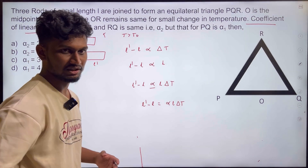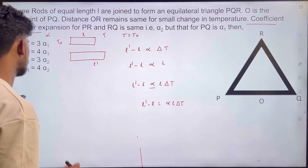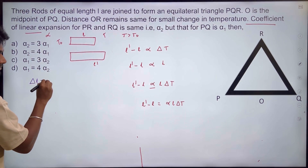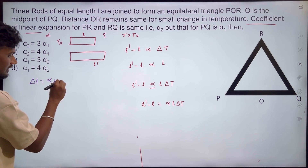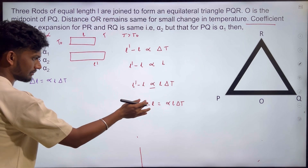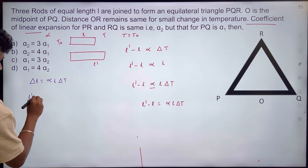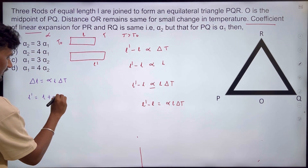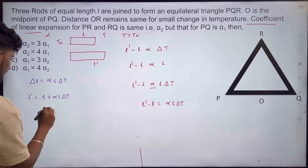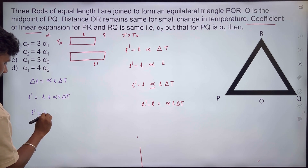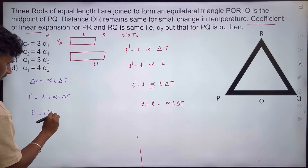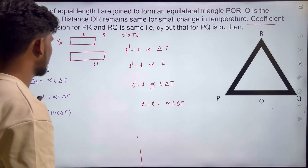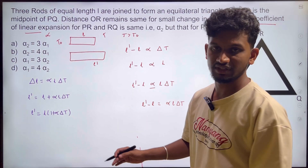So L' is the new length and L is the old length. The change in length delta-L equals alpha into L into delta-T. Therefore the new length L' equals L plus alpha·L·delta-T. This is the formula for linear thermal expansion.